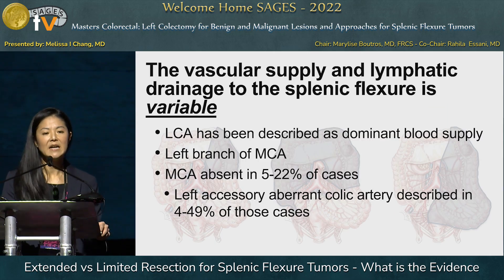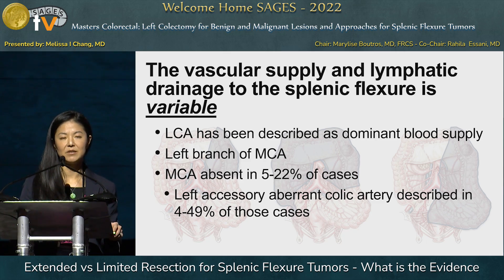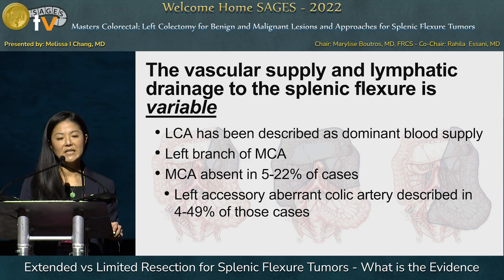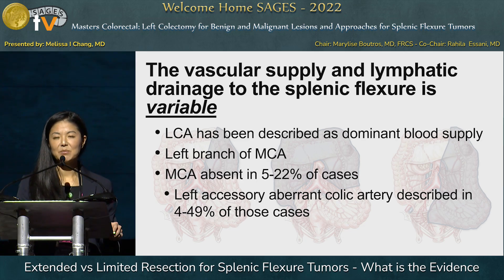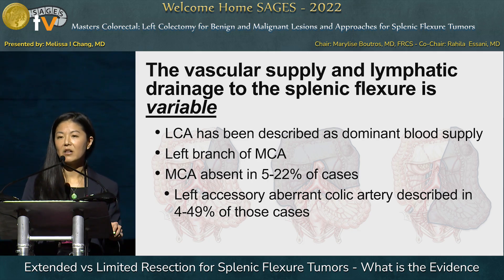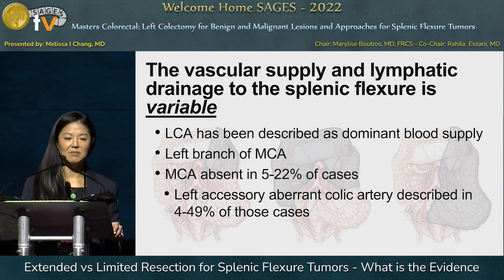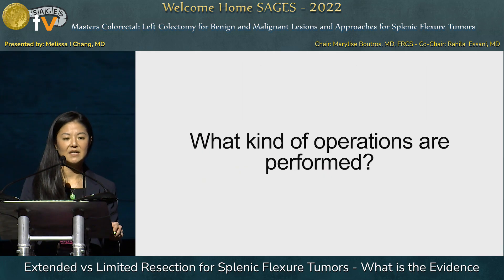The vascular supply and lymphatic drainage to the splenic flexure is variable. Studies have described the left colic artery as the most dominant blood supply in about 50 to 90 percent of cases, with the second most common being the left branch of the middle colic artery. The middle colic artery is absent in about 5 to 22 percent of cases, and in that situation there is a left accessory aberrant colic artery described in about 4 to 49 percent of those cases.